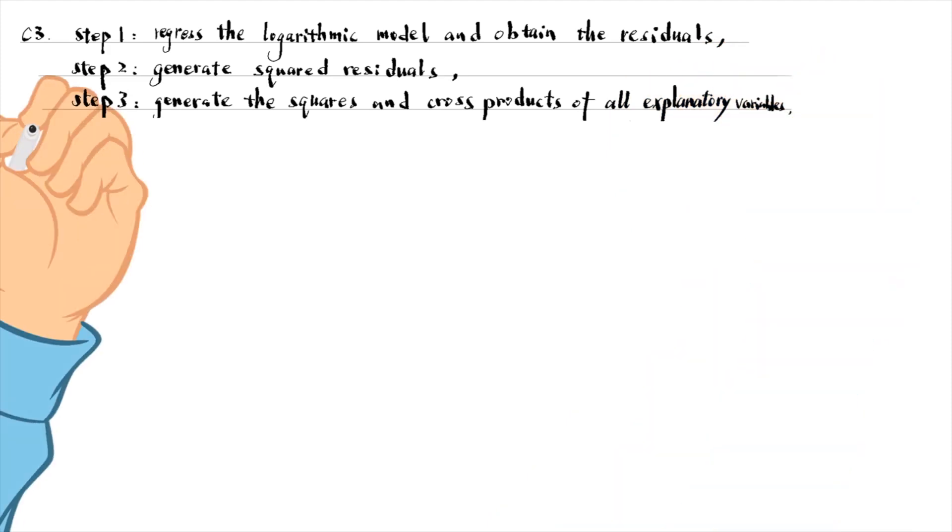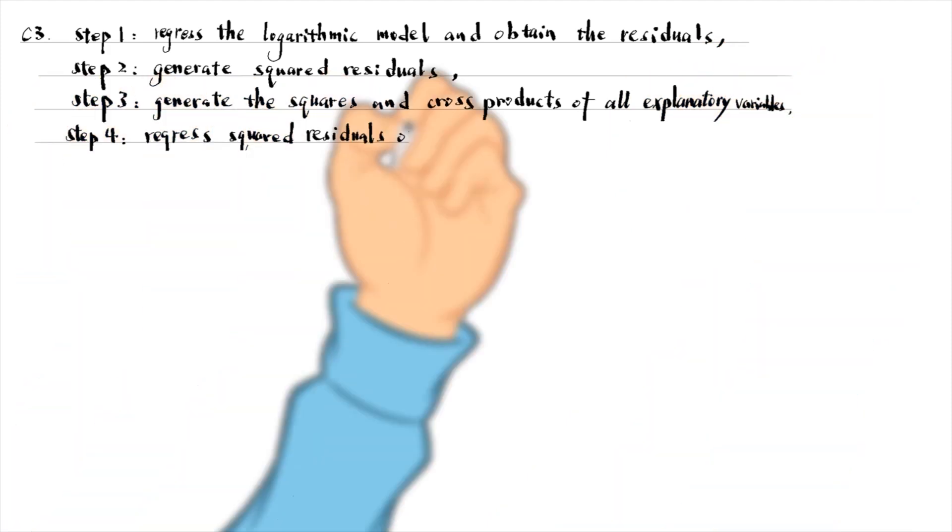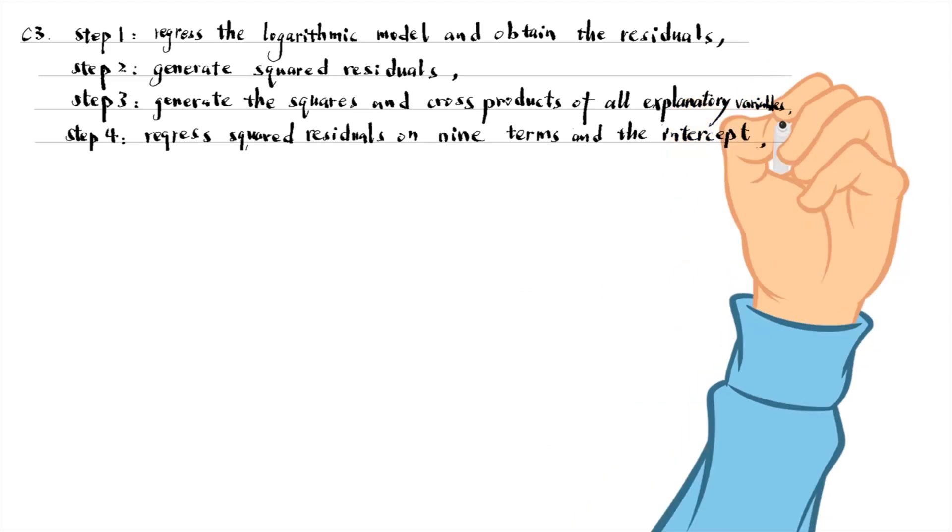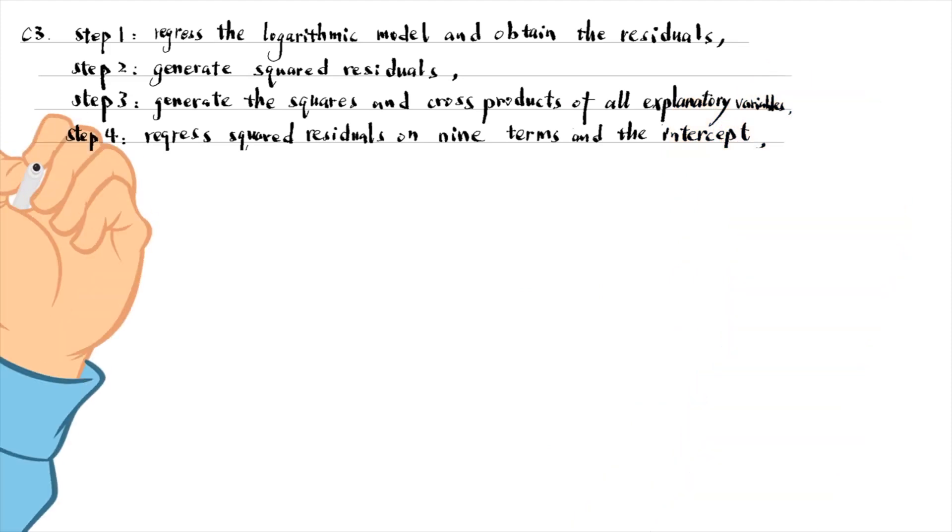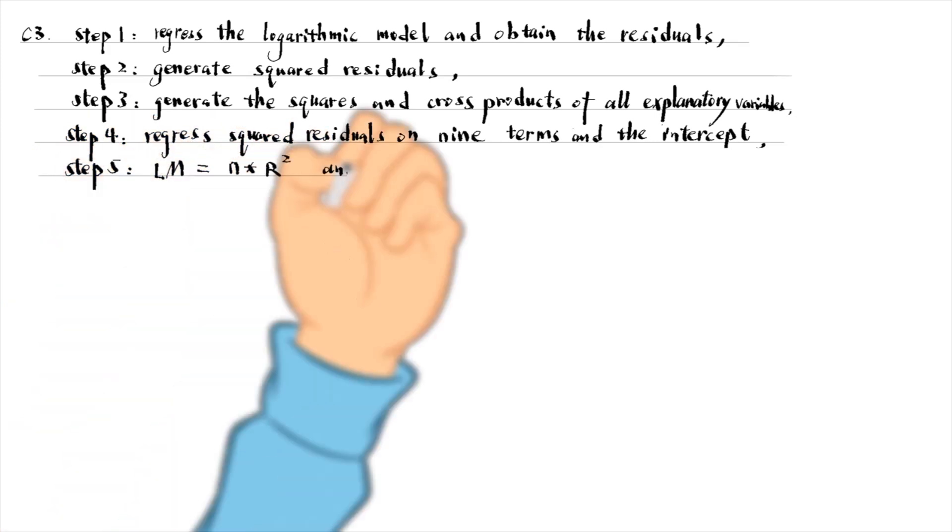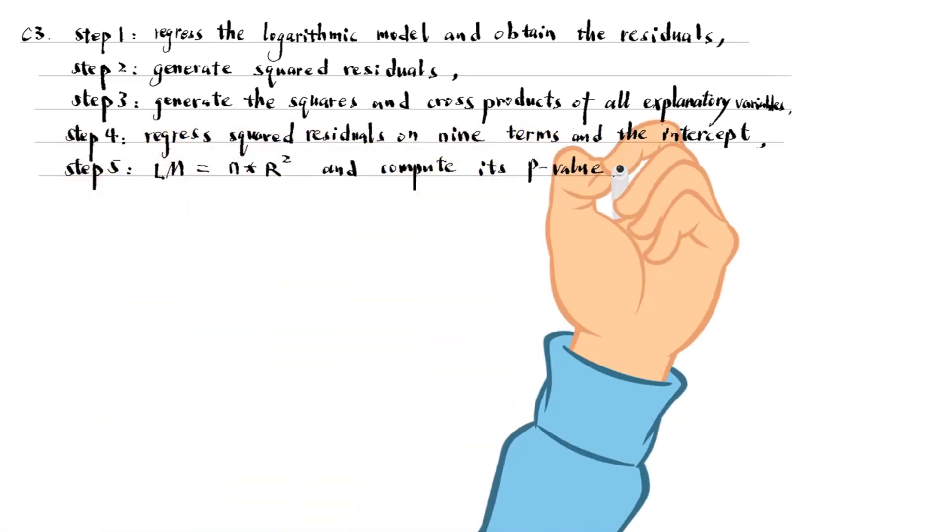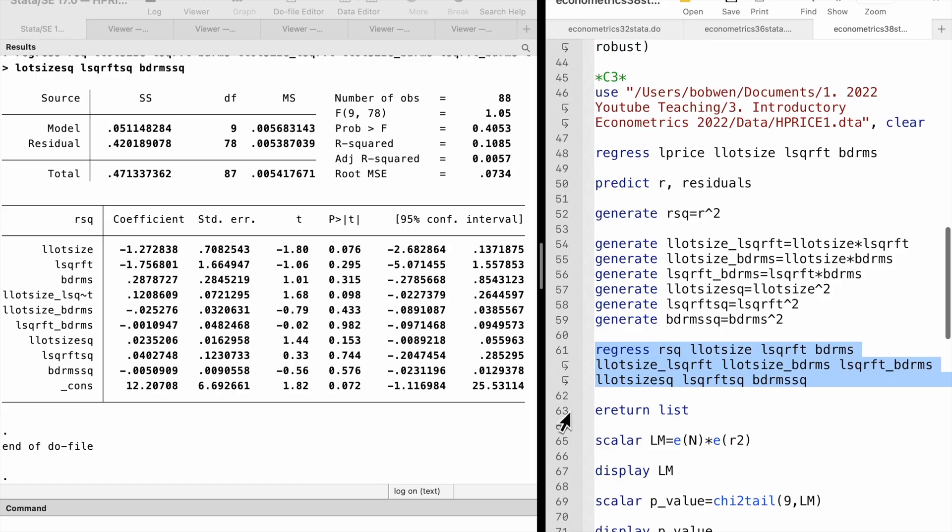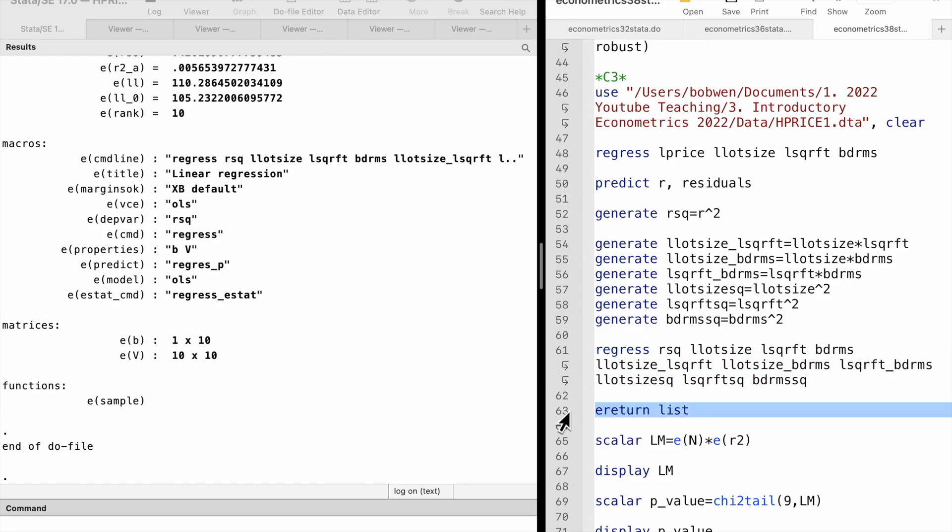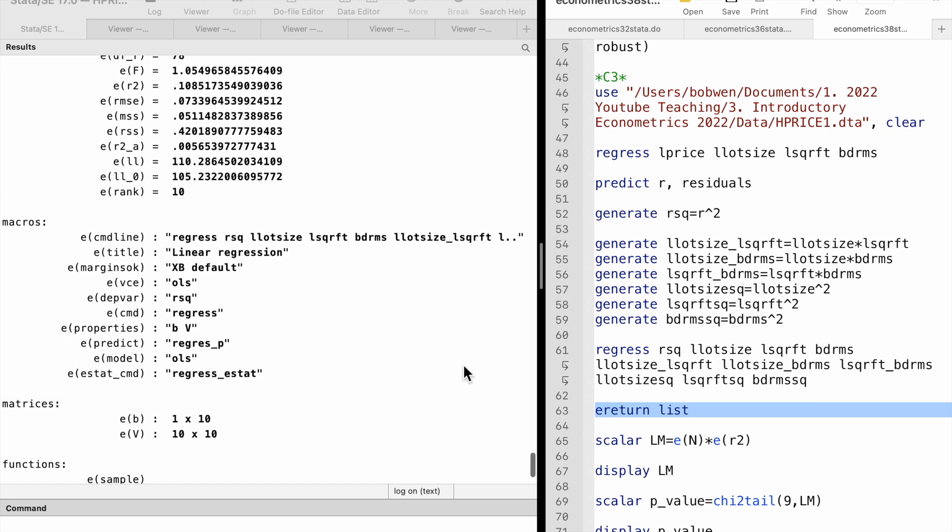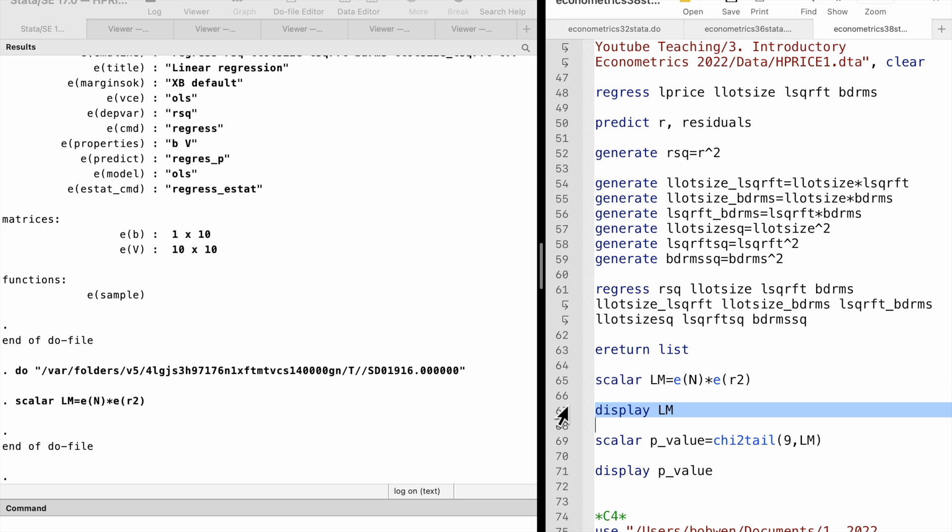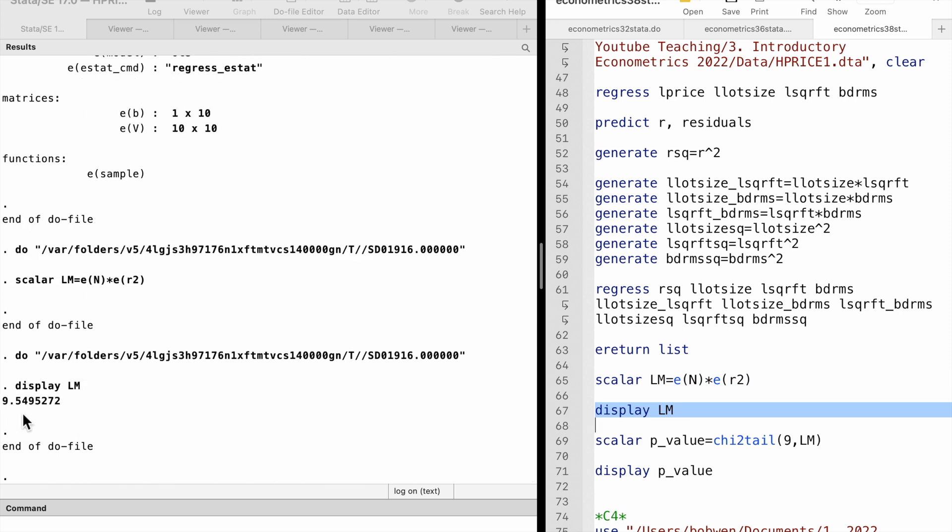Next, we run the White regression of the squared residuals on the 9 explanatory variables and the intercept. The LM statistic equals the sample size times the R squared from the White regression. We can type eReturnList to find all the stored results. Finally, we can compute the p-value for the LM statistic.